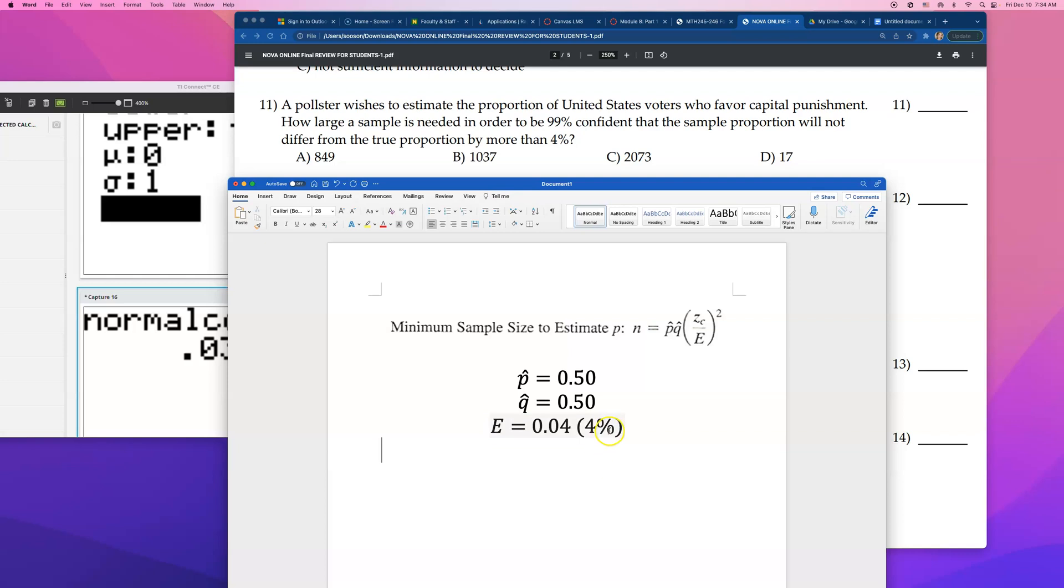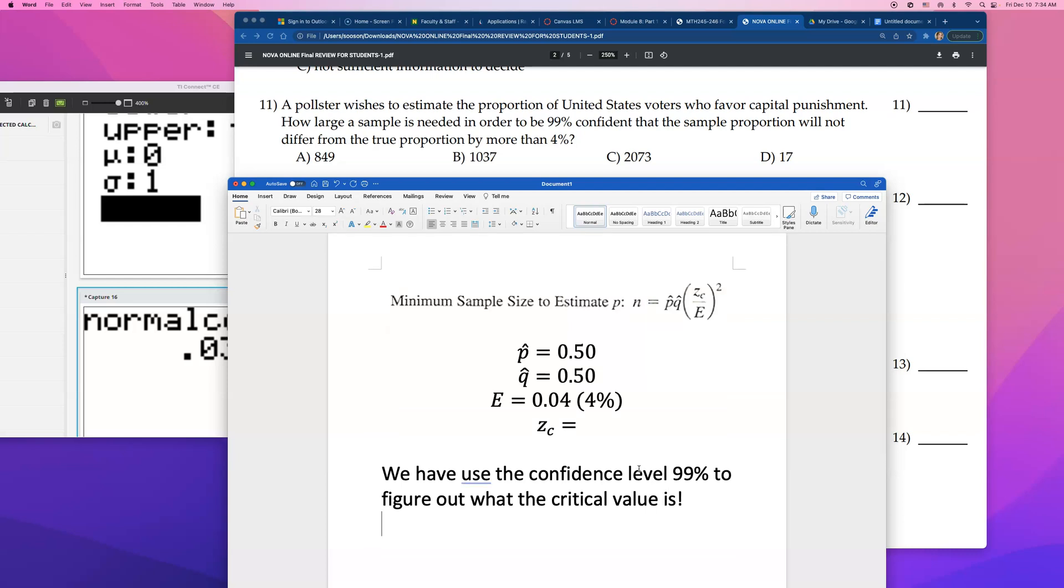Now, I think the hardest part is really figuring out that the critical value Z is of C. The critical value is Z, C. So I'll go ahead and label this, and I'll explain it to you how to find this. Z_C. And that is not 0.99. In fact, the C, we have to use the confidence level, 99%, to figure out what the critical value is. For this, we're going to have to use normal CDF, or I think this is going to be the inverse norm.